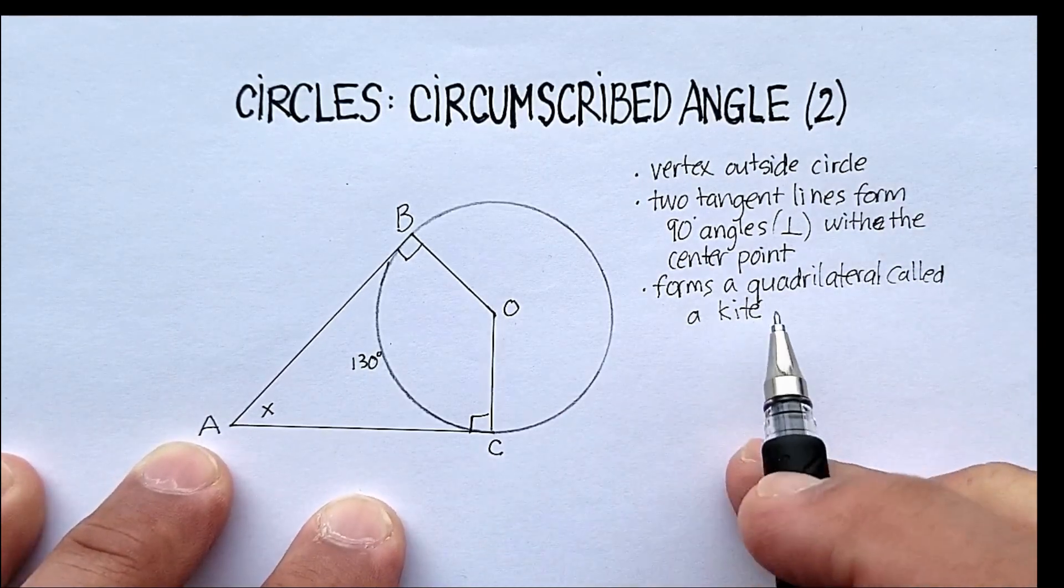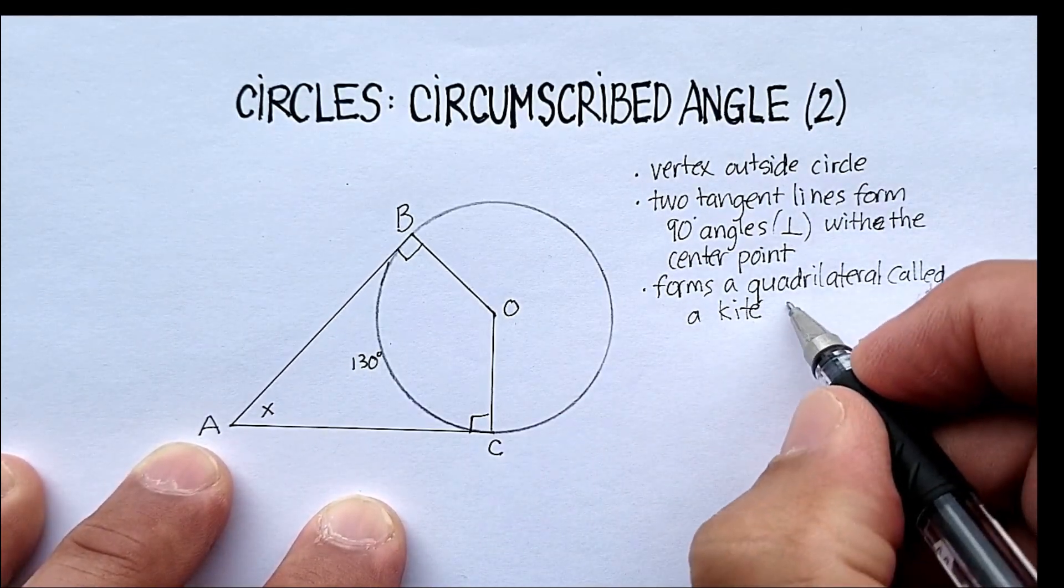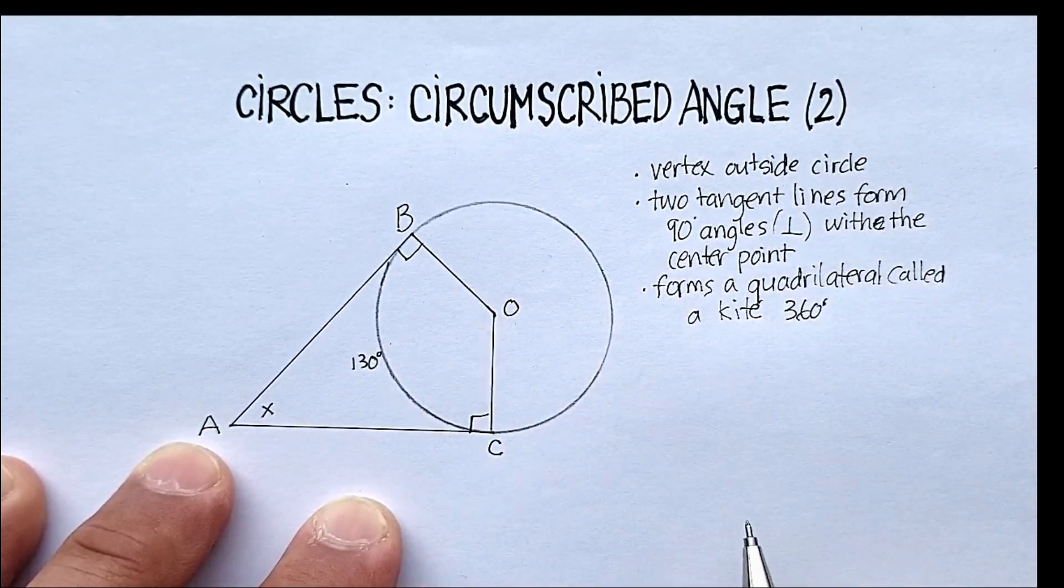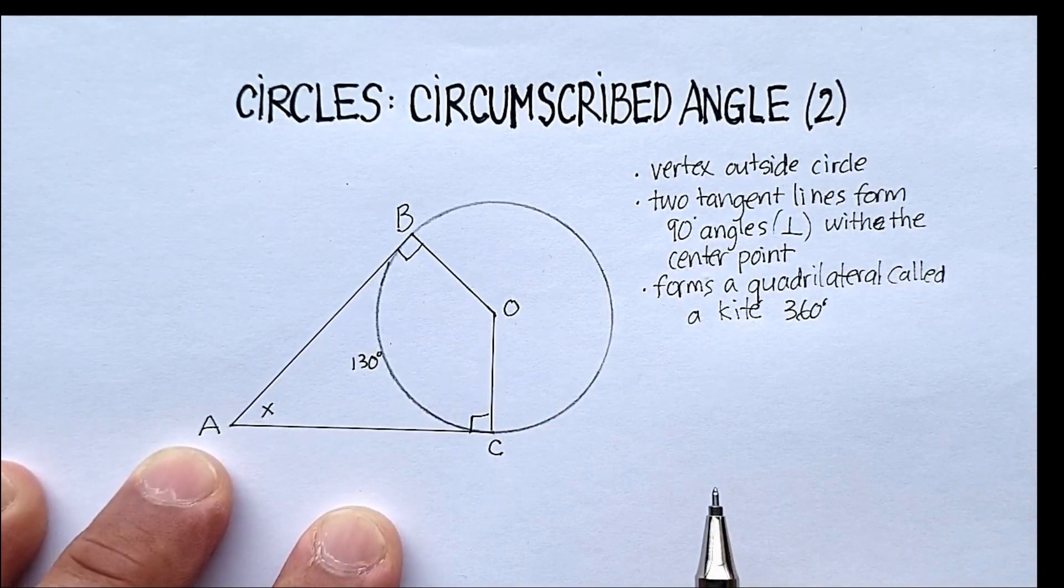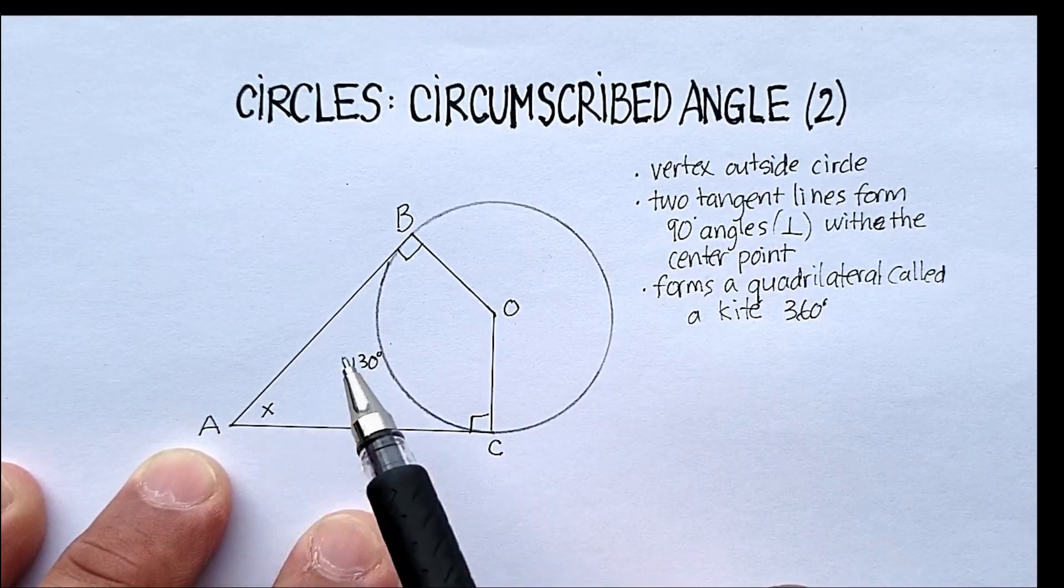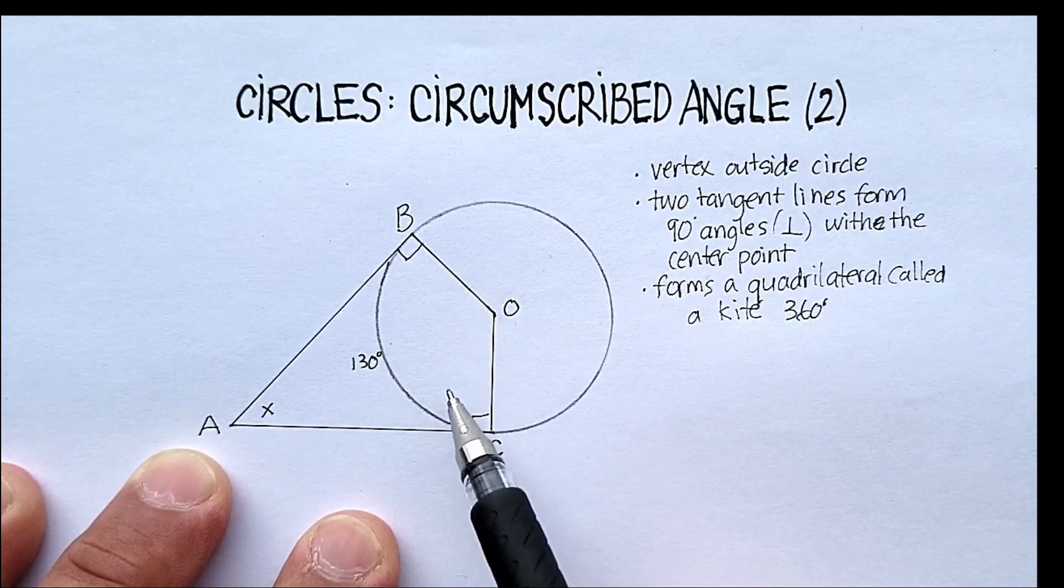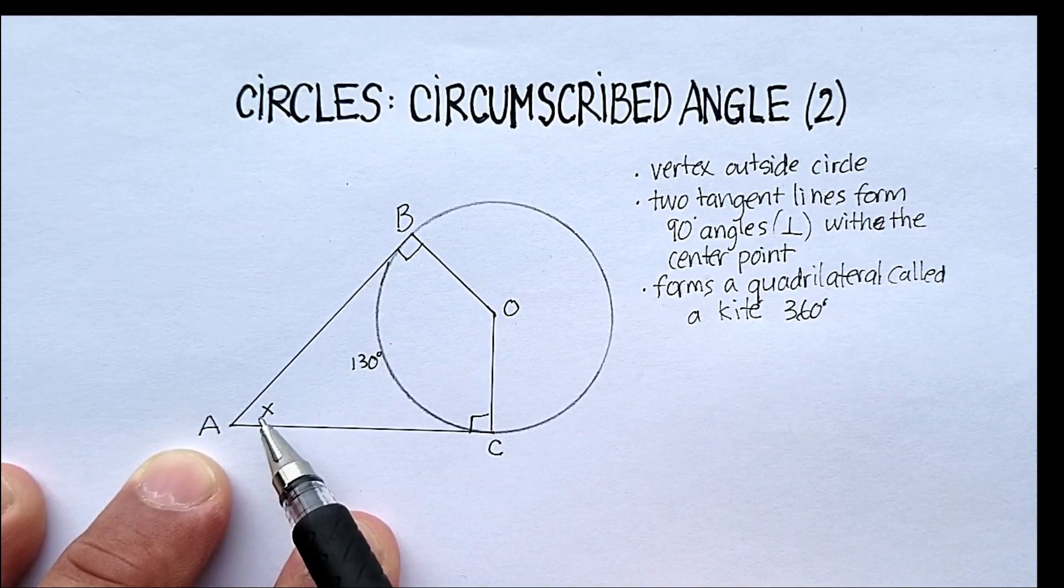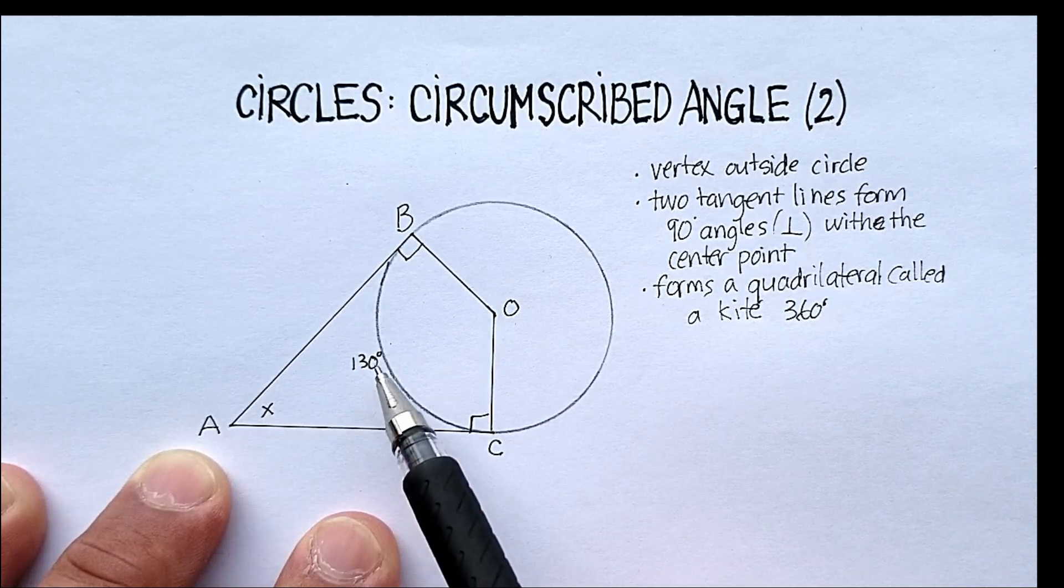Now, you know that any four-sided figure has 360 degrees internally or internal angles. So one thing that you could do to figure out the angle or the measure of a circumscribed angle is to add up all three of the other angles and subtract from 360. And you need to know the third angle.